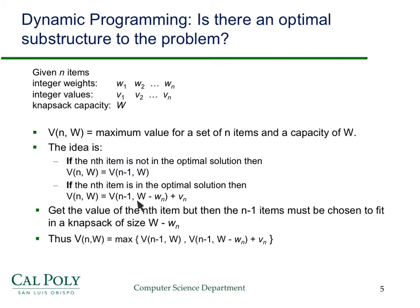The nth item uses up weight w_n in the knapsack, giving value v_n, and then you fill the remaining capacity as best you can from the previous n-1 items. This leads to the recurrence relation: V(n, w) = max( V(n-1, w), V(n-1, w - w_n) + v_n ). We've specified it for the last item, but as in previous examples, this easily generalizes to a general recurrence relation.